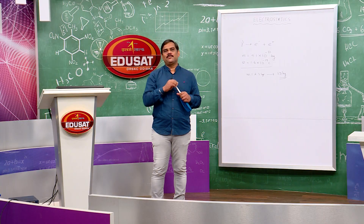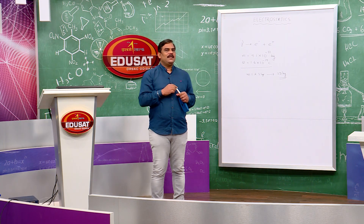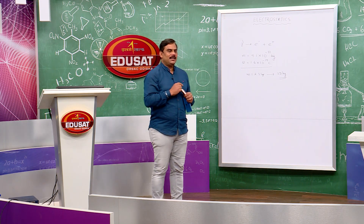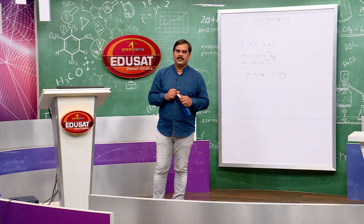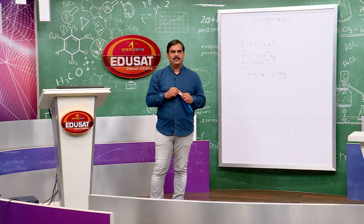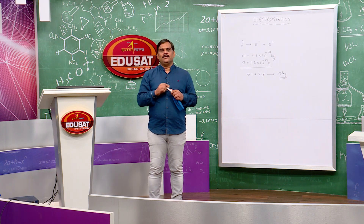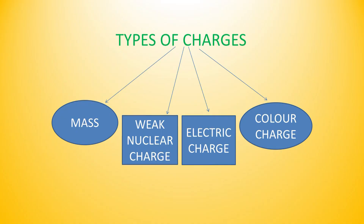Due to these 4 types of fundamental charges we are getting stable nuclei, stable atoms, stable molecules, stable clusters and super clusters. Now let us see these charges one by one. The 4 types of fundamental charges are mass, weak nuclear charge, electric charge, and color charge. First of all, let us discuss about mass. Mass is a fundamental property, also known as a fundamental charge of matter.